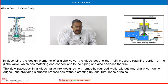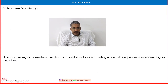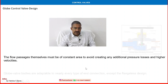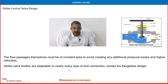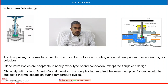The seating area has the closing element and the flow opening area. The flow passages must be of constant area, avoiding any additional pressure losses and higher velocities. Globe valve bodies are adaptable to nearly every type of end connection. With a long face-to-face dimension, the long bolting required between two pipe flanges would be subject to thermal expansion during the temperature cycle — that must be considered.